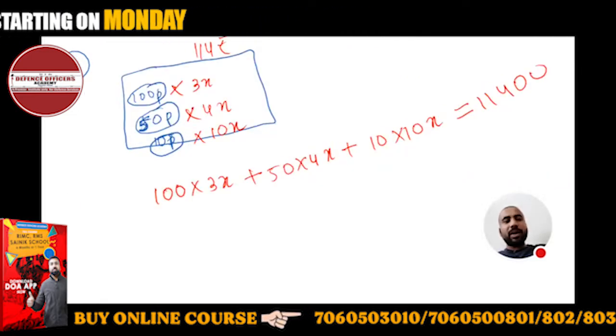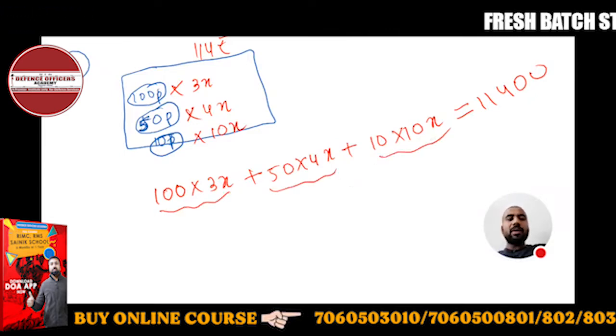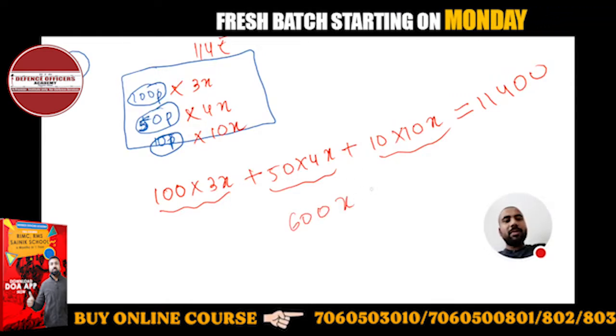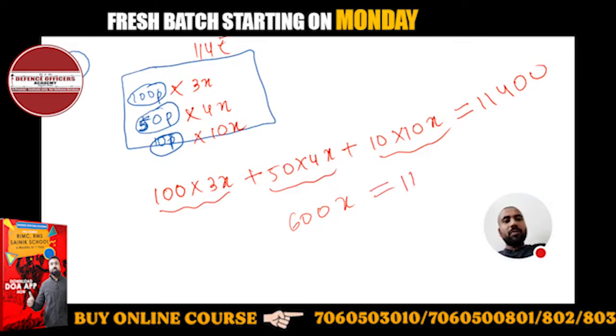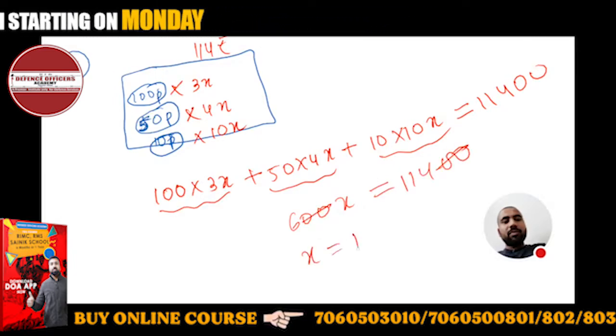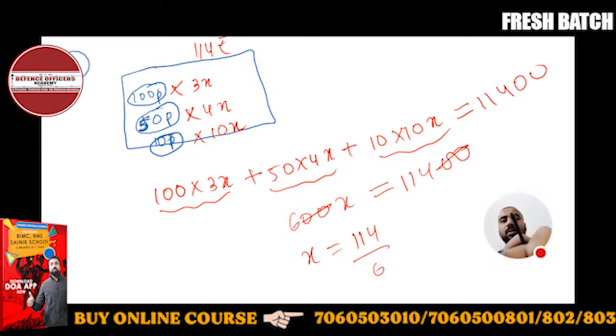50 paisa coins is 4x, so you have to find x. This will be 300x, this will be 200x, this will be 100x. So 600x directly equals 11400. Cancel and x will be 114 upon 6.